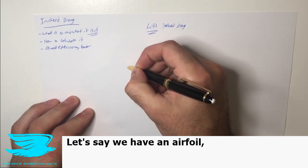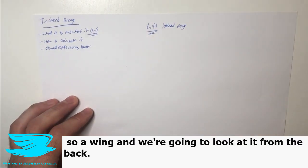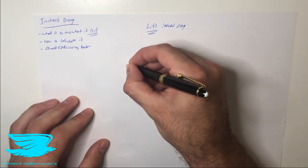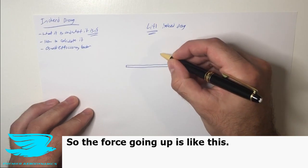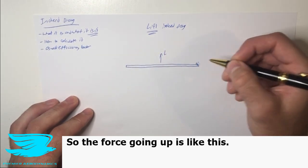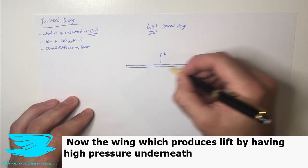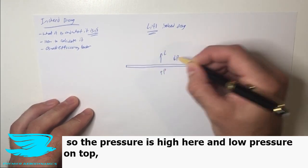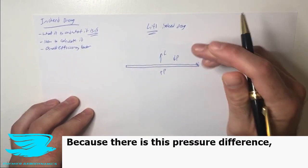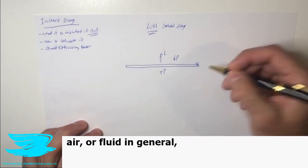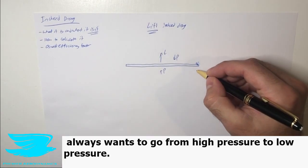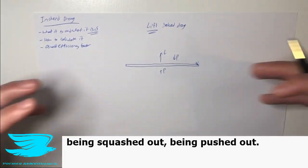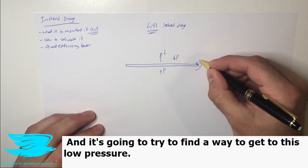Let's say we have an airfoil, so a wing, and we're gonna look at it from the back. And we are producing lift, so the force going up is like this. The wing produces lift by having high pressure underneath, so the pressure is high here, and low pressure on top, relatively speaking. Because there is this pressure difference, air and fluid in general always wants to go from high pressure to low pressure. So that means that this pressure underneath, the air under here is being squashed out, being pushed out, and it's gonna try to find a way to get to this low pressure.